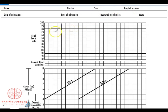The next part of the partograph is the fetal heart rate section, where you record the fetal heart rate after each assessment. This part has two highlighted lines running parallel to each other — one at 100 and the other at 180. The normal fetal heart rate should be between these two lines; some literature states between 120 and 160, but it must be between 100 and 180.